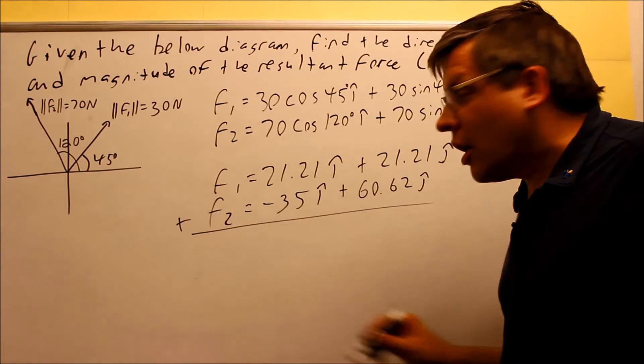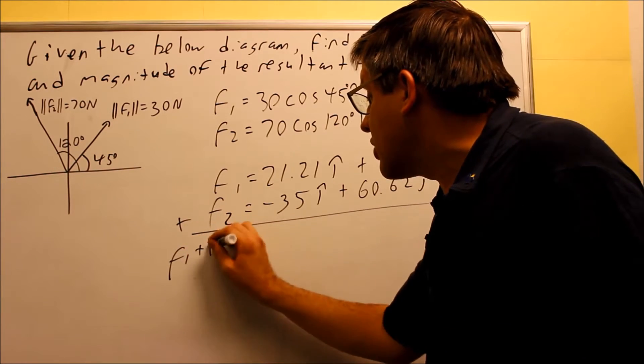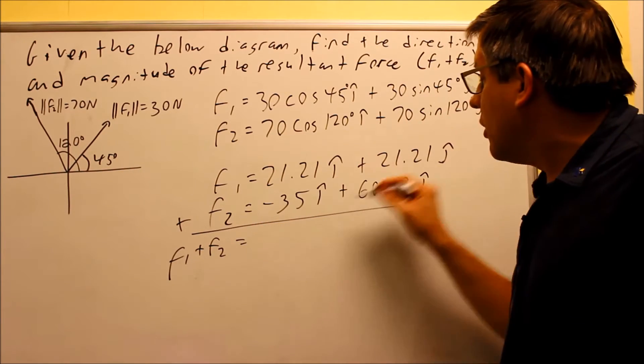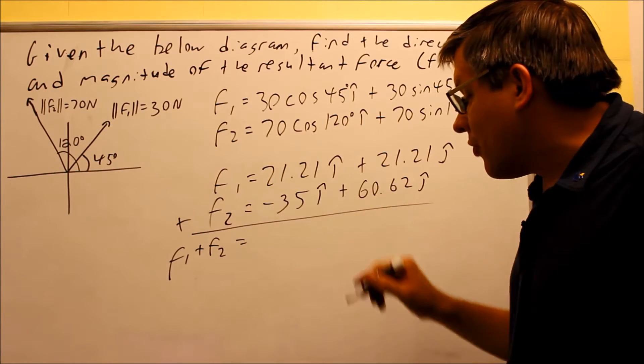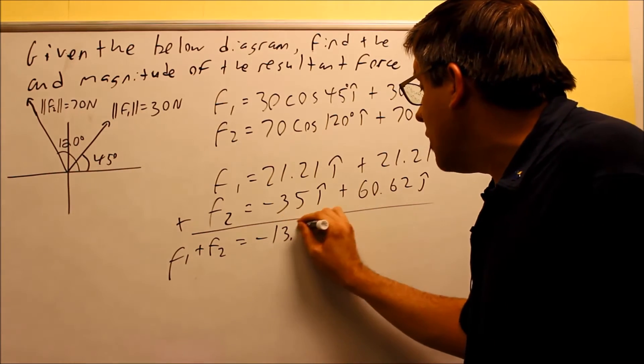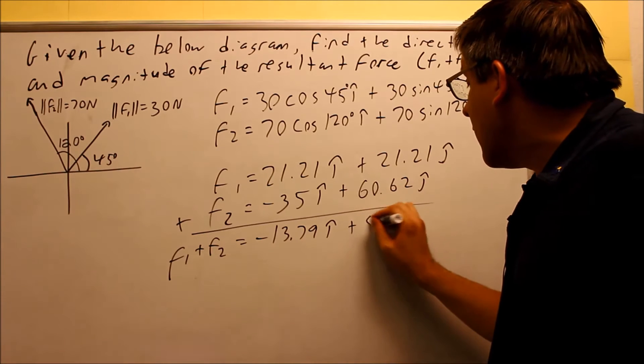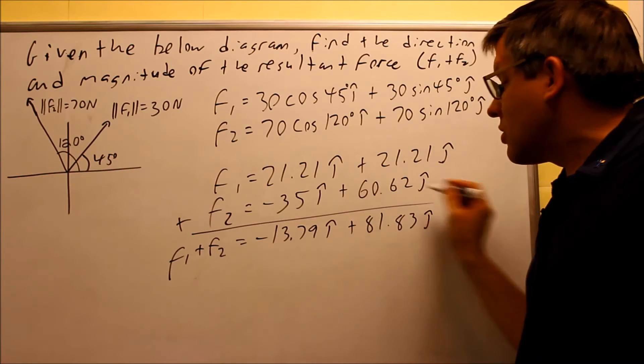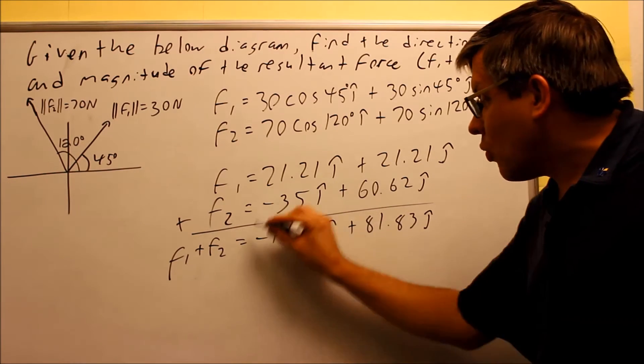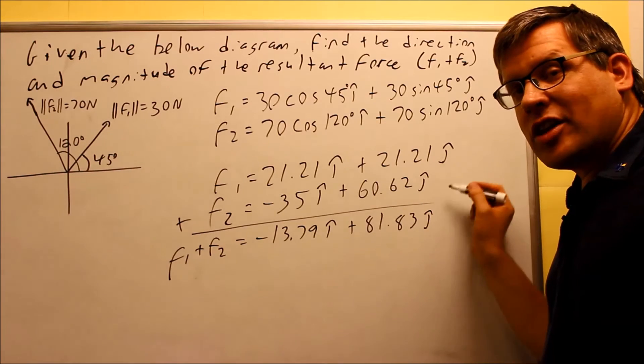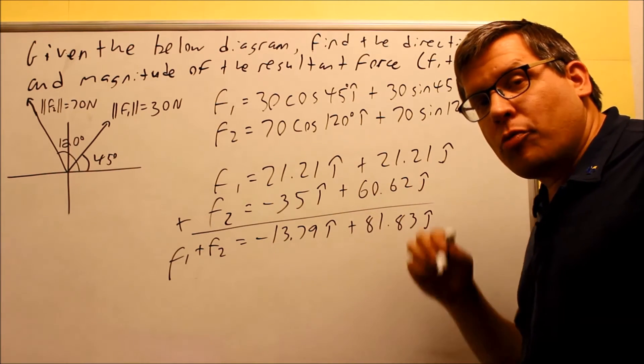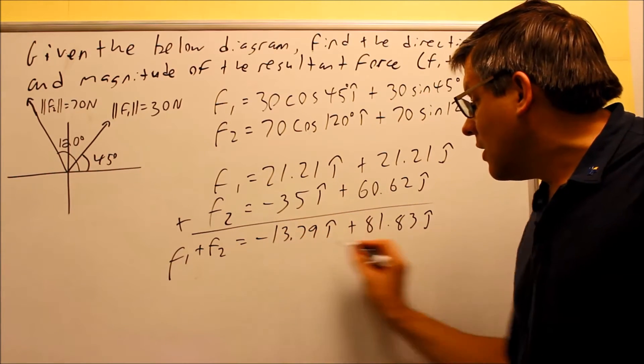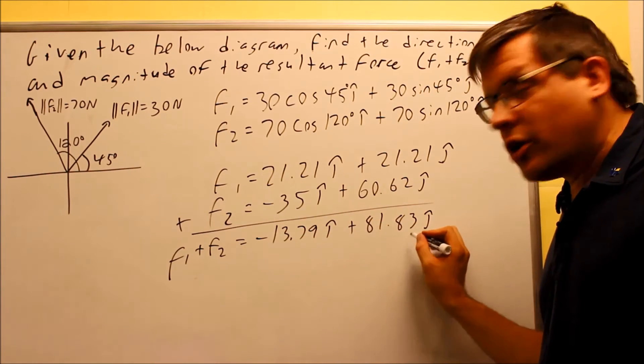We're going to add both of these together. So, we're going to get F1 plus F2. Now, that F1 plus F2, that is going to be our resultant force. We're going to add both of these together individually. Now, if I add the first two together, I get negative 13.79i. Add these together, I get 81.83j. So, that right here, this is my resultant vector. This is the one that I'm going to use in order to find the magnitude and the direction. We just talked about the formulas that we've got to use to find the magnitude and direction of the resultant force. This is my A, and this right here, the 81.83, that's my B.